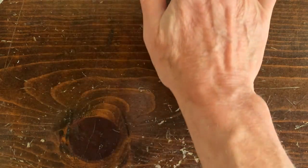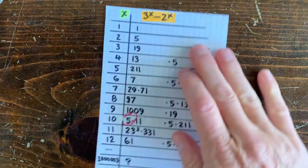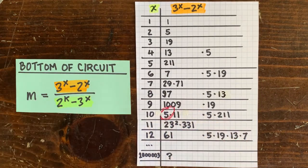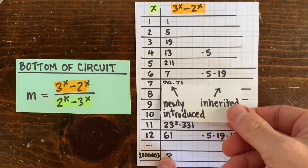Last time we looked at the factors of 3 to the x minus 2 to the x, which broke down into inherited factors and newly introduced factors.